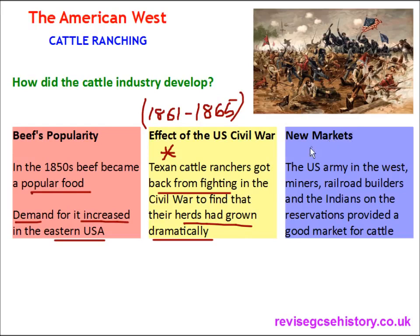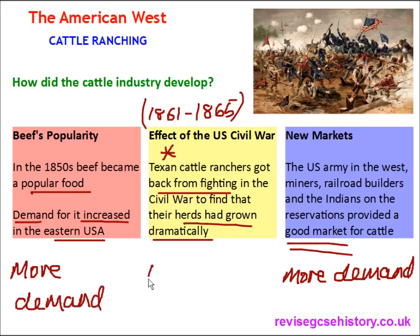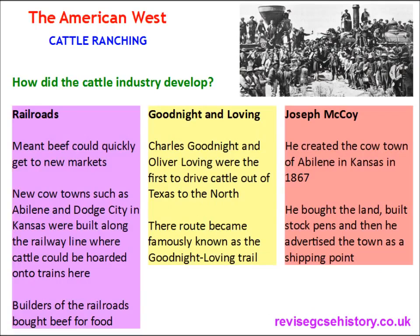New markets is another factor explaining why the cattle industry developed. Examples of new markets include the US Army in the West, miners, railroad builders, and the Indians on the reservations — all of which provided good demand for cattle. Beef's popularity meant there was more demand, and the effects of the Civil War meant there was more cattle, so there was more supply to meet that demand.